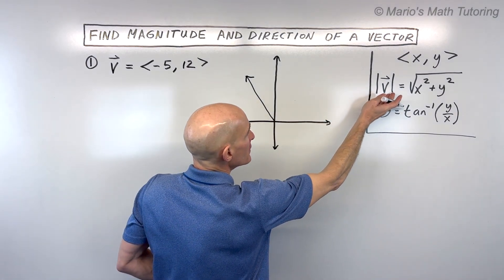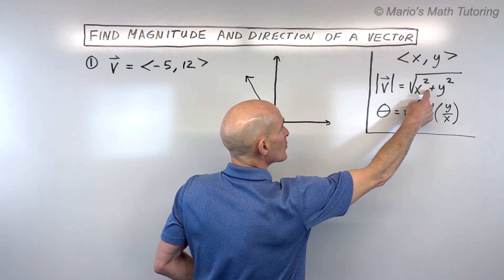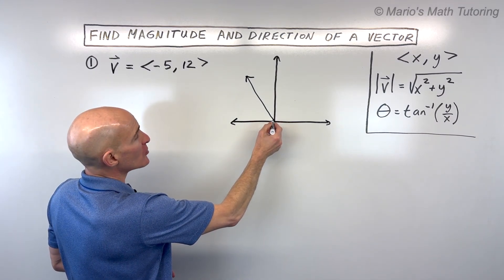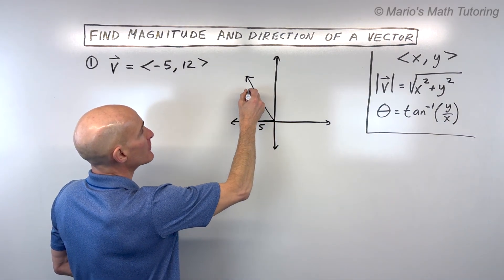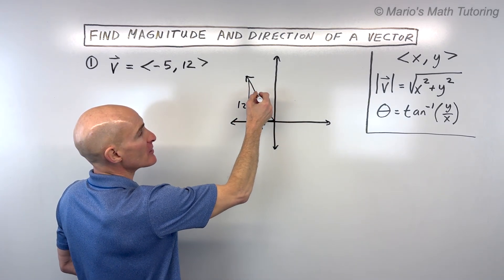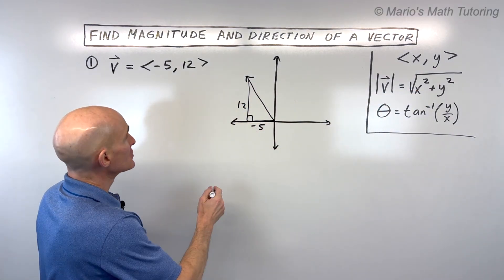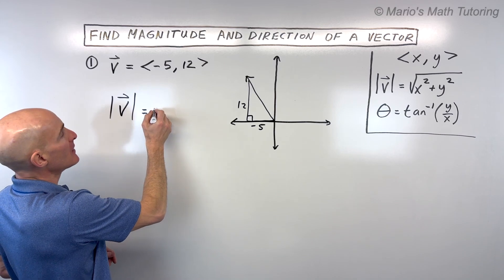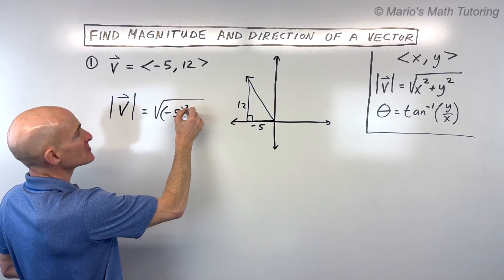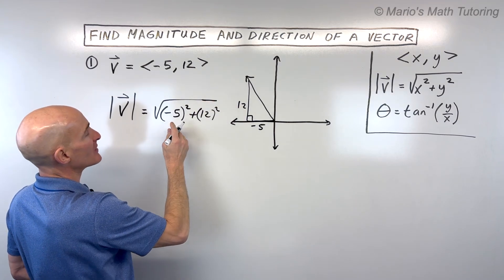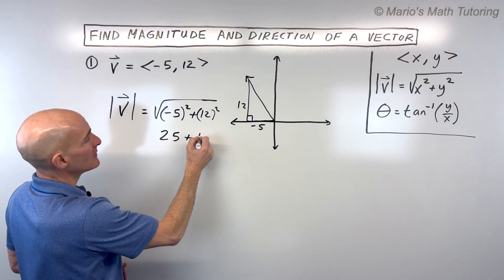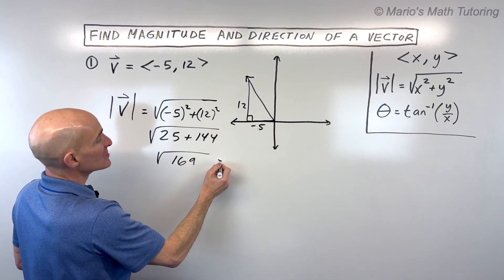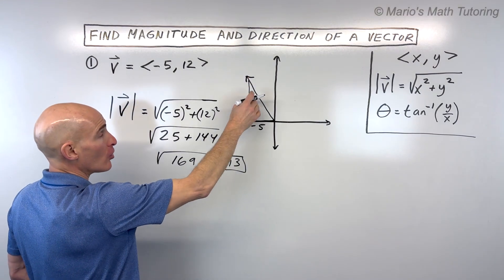We have a formula we can use: the square root of the x component squared plus the y component squared of our vector in component form. You can think of this as a right triangle — you're going left 5, you're going up 12 — and you can do the Pythagorean theorem, which is essentially where this formula comes from. So the magnitude of vector v is the square root of negative 5 squared plus 12 squared. That gives us 25 plus 144, which is the square root of 169, equal to 13.